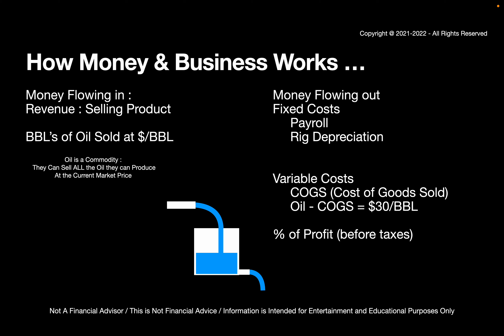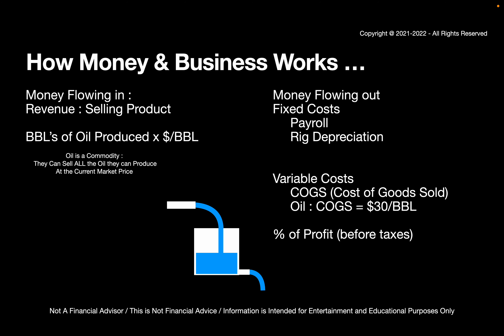In terms of income or revenue, your revenue is the barrels of oil that you've sold times the price per barrel. But oil is a commodity — it gets sold on the open market. Because oil is a commodity, you can sell all the oil you can produce. So really, it becomes the amount of oil you can produce times the dollars per barrel you get on the open market. That's what your revenue is for oil.